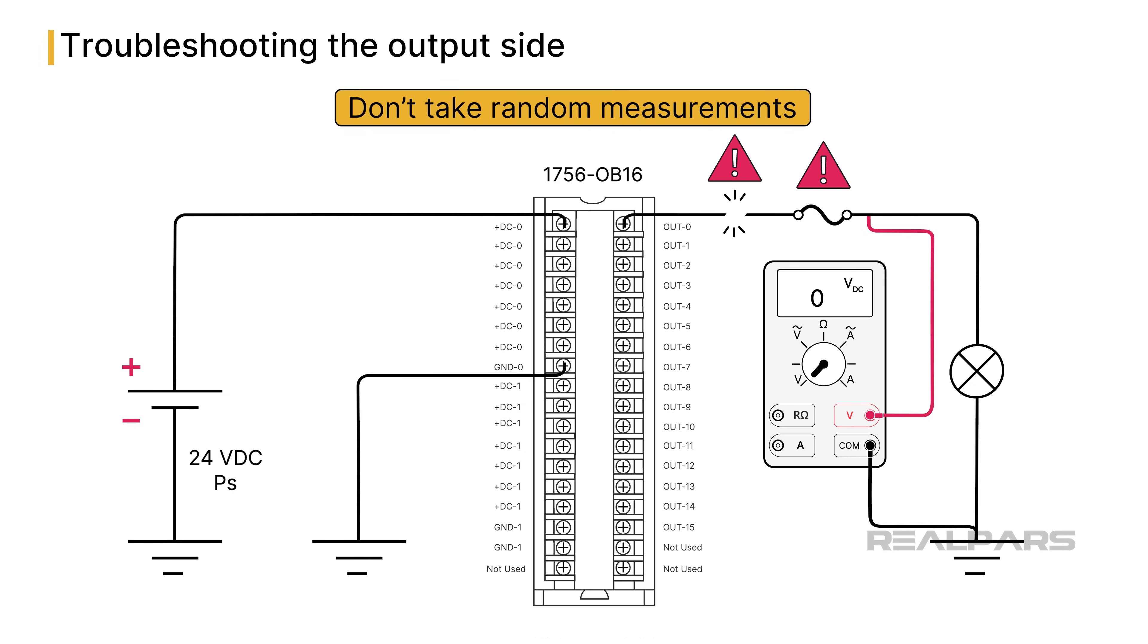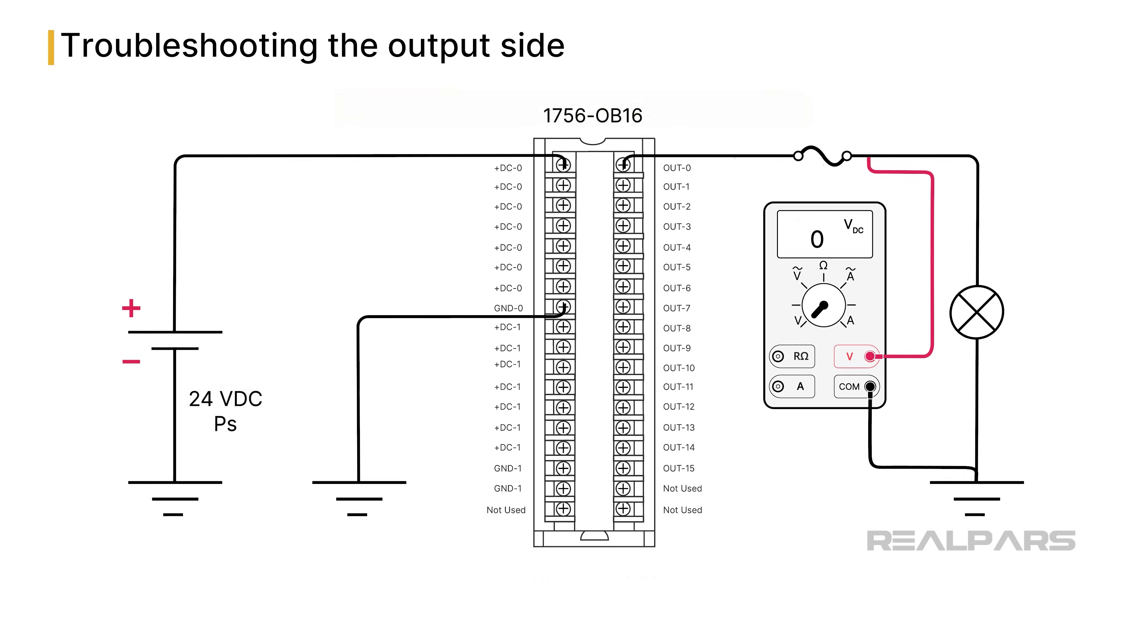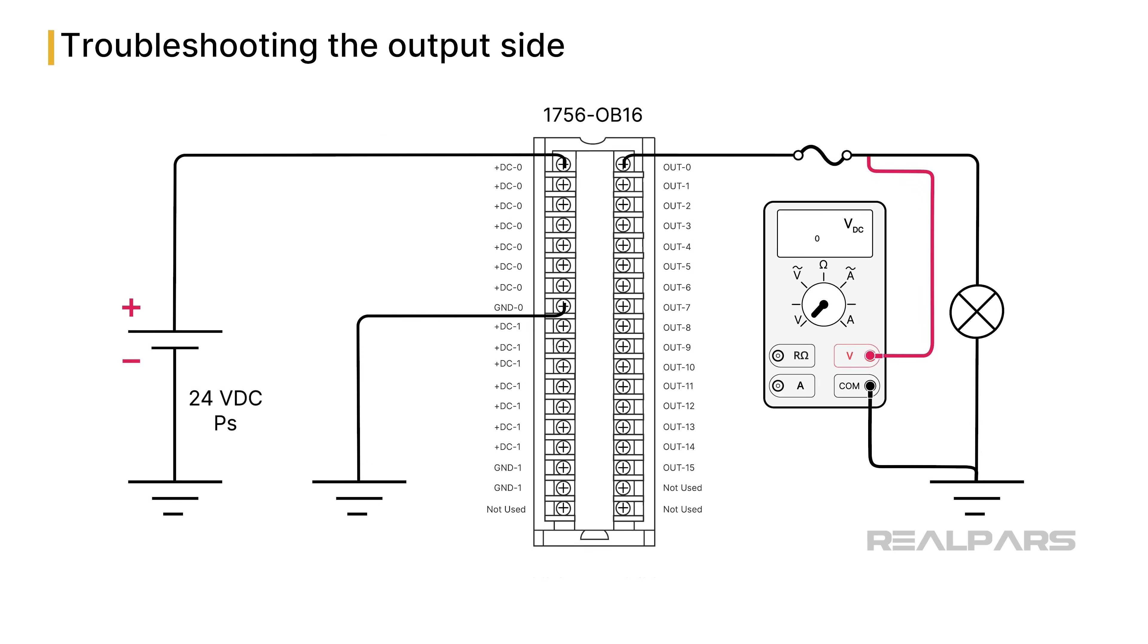A broken wire on the output module side of the fuse may be the cause, but it is unlikely. If the voltmeter reads 24 volts DC, the fault could be a defective lamp, a broken wire, or a corroded ground connection.